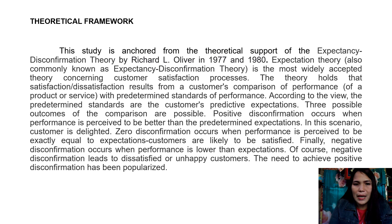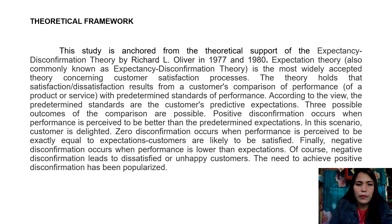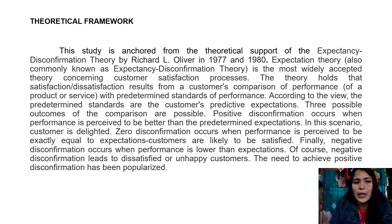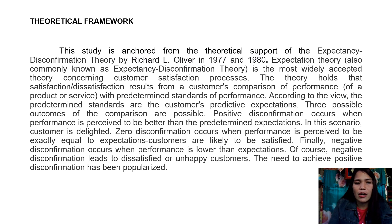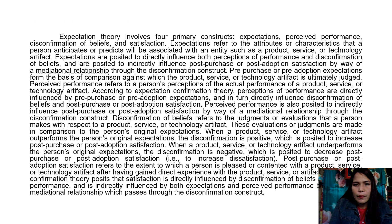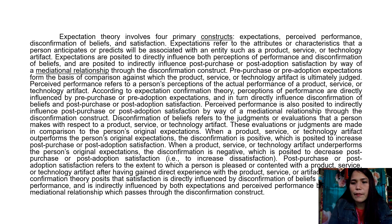There are three possible outcomes of this comparison. Number one is positive disconfirmation, which occurs when performance is perceived to be better than the predetermined expectations. Zero disconfirmation occurs when performance is perceived to be exactly equal to expectations and customers are likely to be satisfied. Finally, negative disconfirmation occurs when performance is lower than expectations. The expectation theory involves four primary constructs: expectations, perceived performance, disconfirmation of beliefs, and satisfaction.